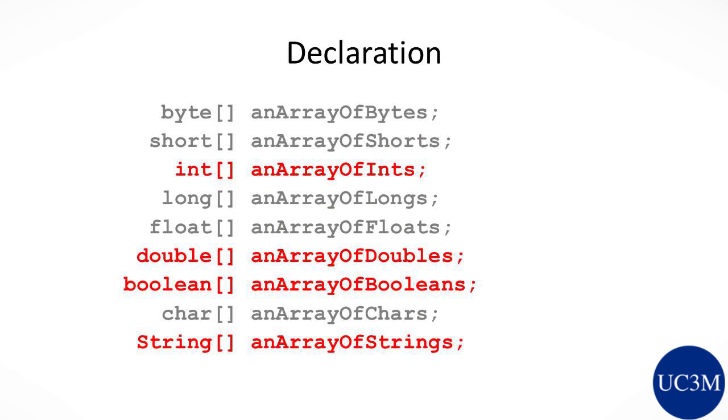Here is how we declare an array. We write the type of the element, then open and close square brackets, and then the name we have chosen for our array. We see that the base type can be any type. And we have highlighted the most relevant ones which we will use in this course.